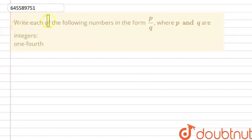Hello everyone. Our question is to write each of the following numbers in the form p by q, that is in the form of a rational number where p and q are integers. And we have given one-fourth.